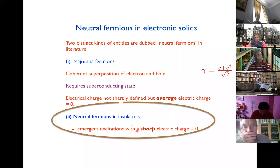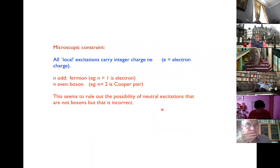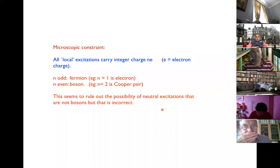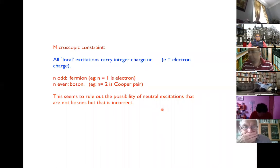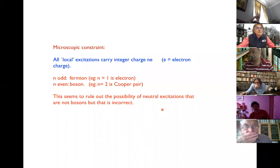There's a simple microscopic constraint that occurs to anyone who thinks about this problem. In any such electronic many-body system, all local excitations must carry integer charge n times e. If n is odd, we have a fermion; if n is even, we have a boson. This constraint seems to rule out neutral excitations that are not bosons — but the key word here is local. The only thing we learn is that neutral excitations that can be created locally are necessarily bosons. Which means that if we postulate an emergent neutral fermion, we must allow for the possibility that some excitations cannot be created by locally perturbing the system. Before going on — I noticed some chat questions. If you don't mind, please just speak up during the talk if you have a question.